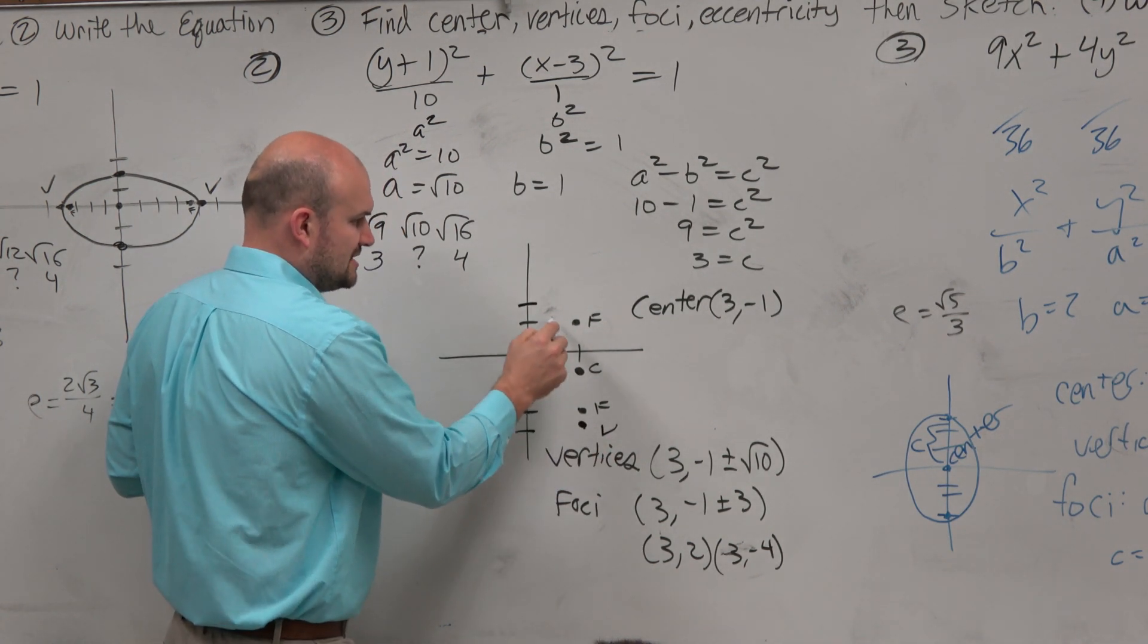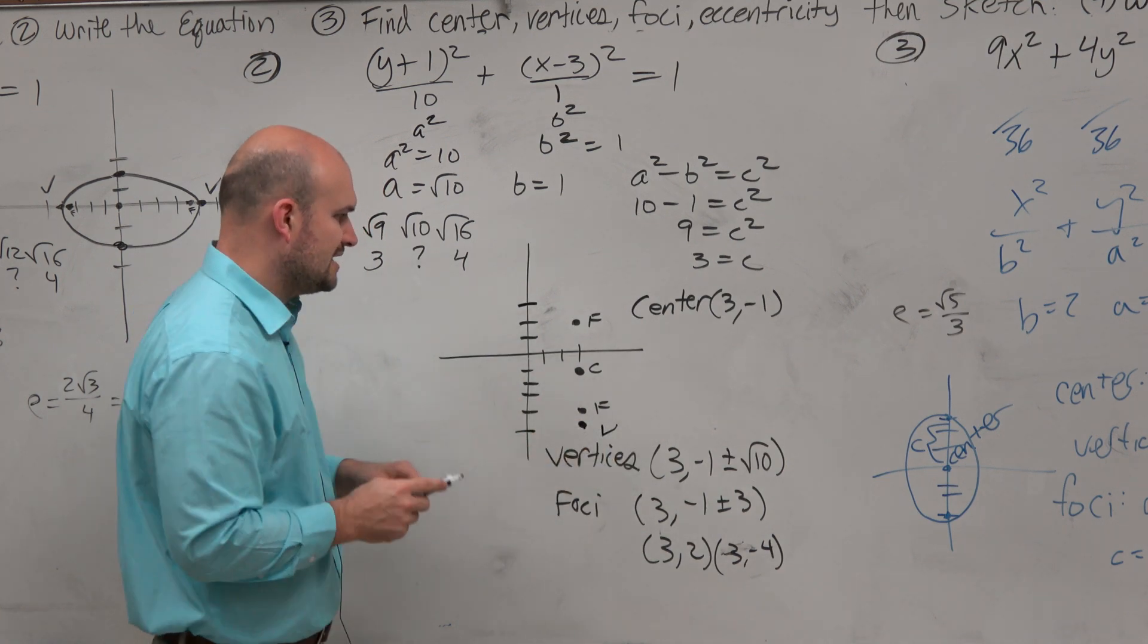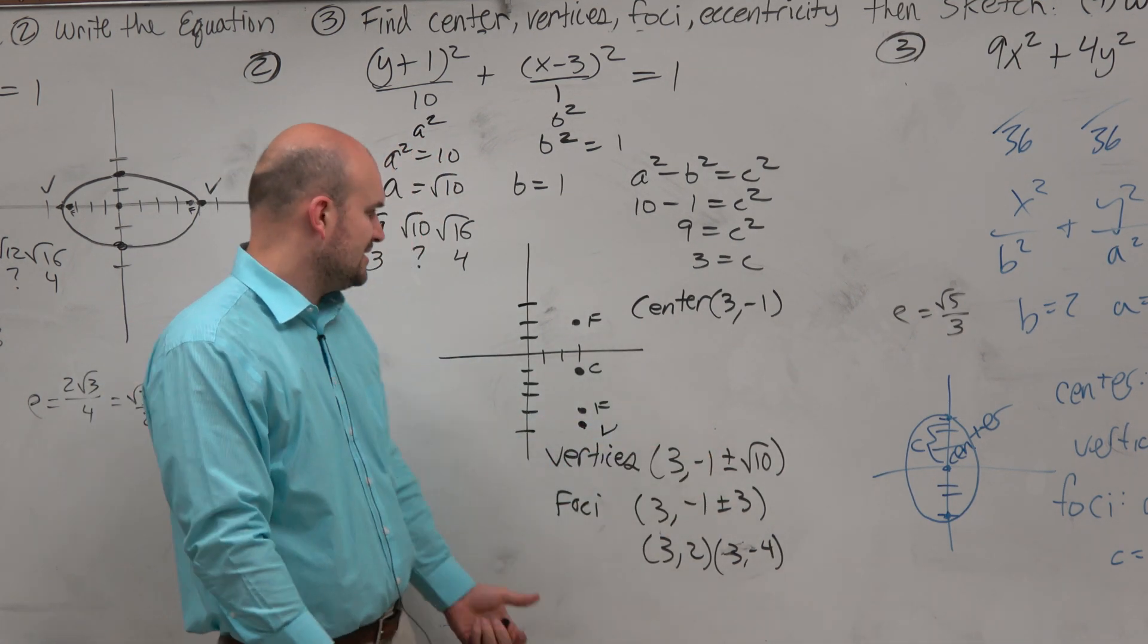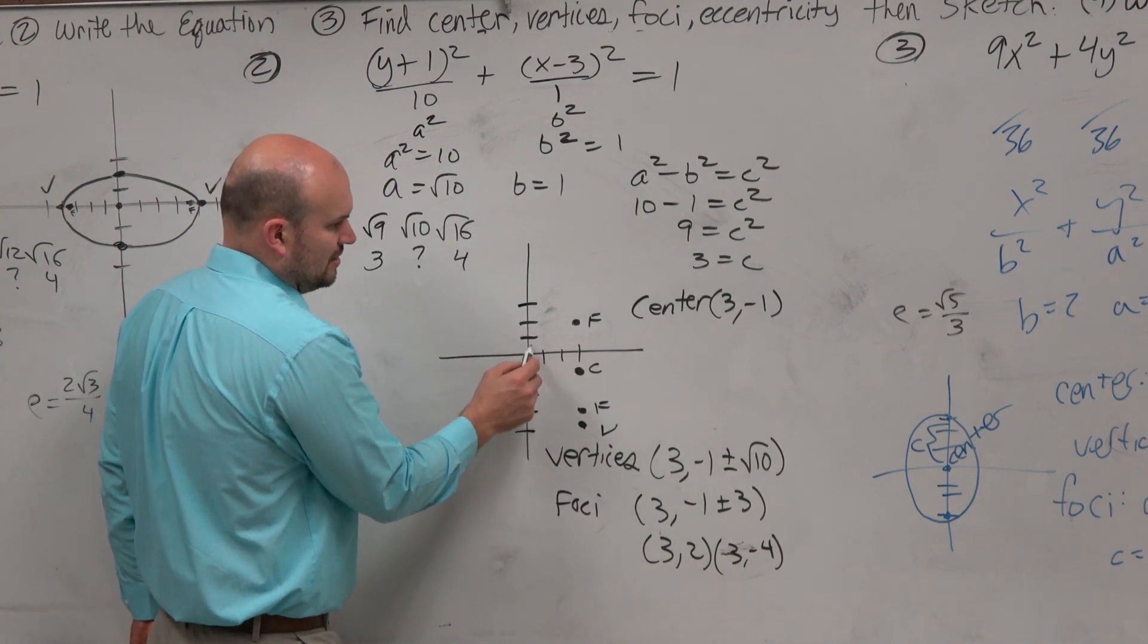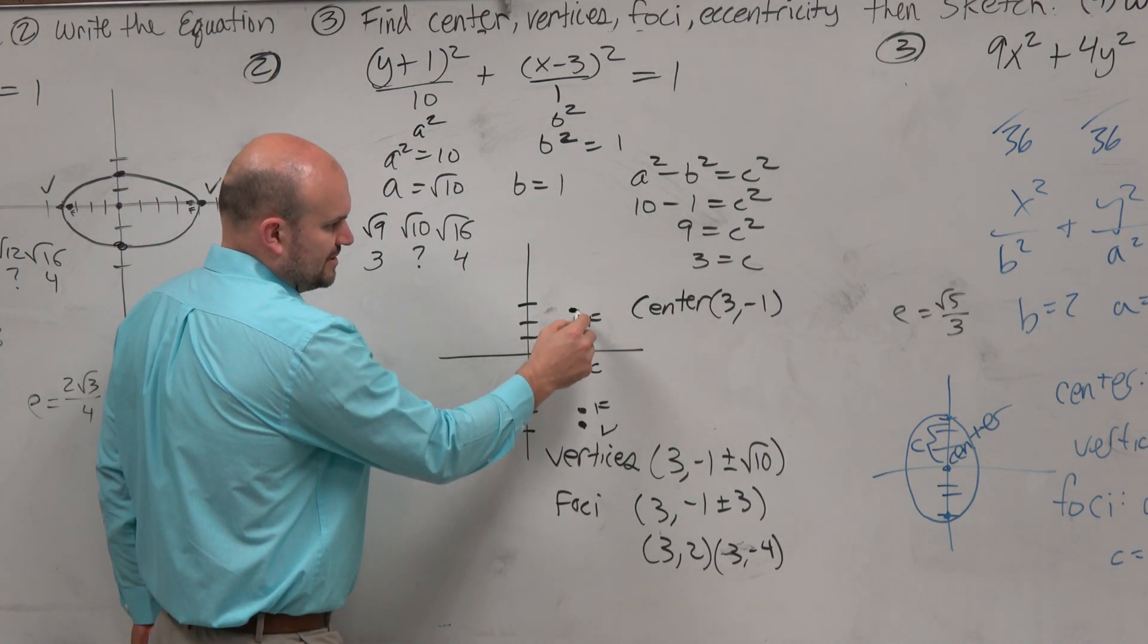And then basically, you can see that if you're going to take negative 1 plus 3 and some change, that's going to be 2 and some change. So that would be 1, 2 and some change up there, so it would be your vertices.